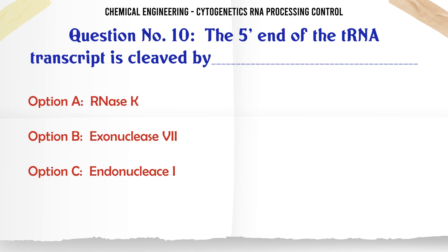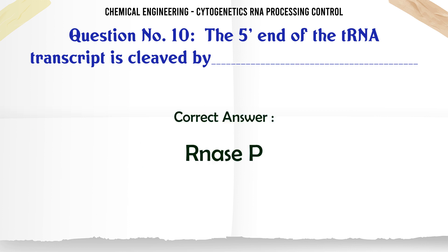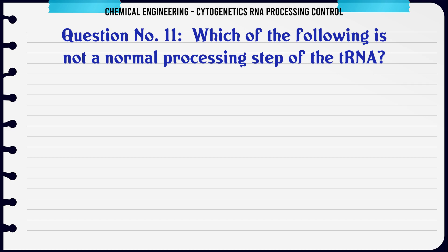The 5' end of the tRNA transcript is cleaved by: A. RNase K, B. Exonuclease 7, C. Endonuclease I, D. RNase P. The correct answer is RNase P.